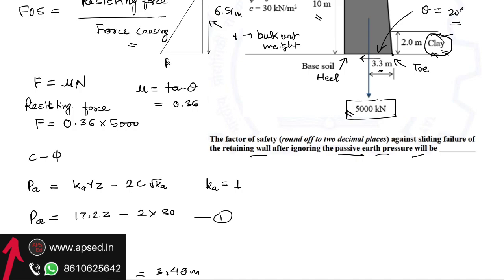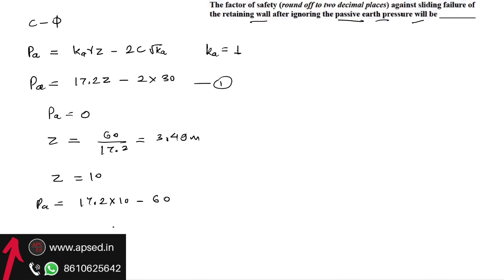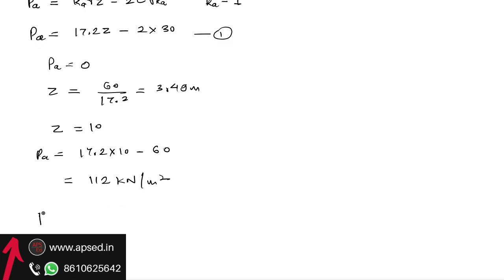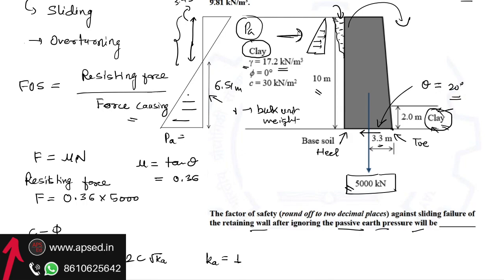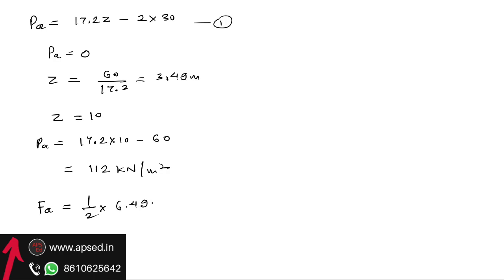At the base of the wall (z = 10 m), the active earth pressure is: pa = 17.2 × 10 − 60 = 172 − 60 = 112 kN/m². The active earth pressure force is the area of the triangular pressure diagram: Fa = ½ × 6.51 × 112 = 364.56 kN/m.